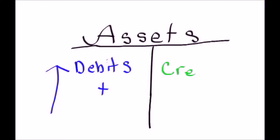If you put it on the credit side for an asset, what you're saying is that that asset decreased the account. Maybe you paid cash for an item. So that's basically how you handle assets. Let's look at liabilities.